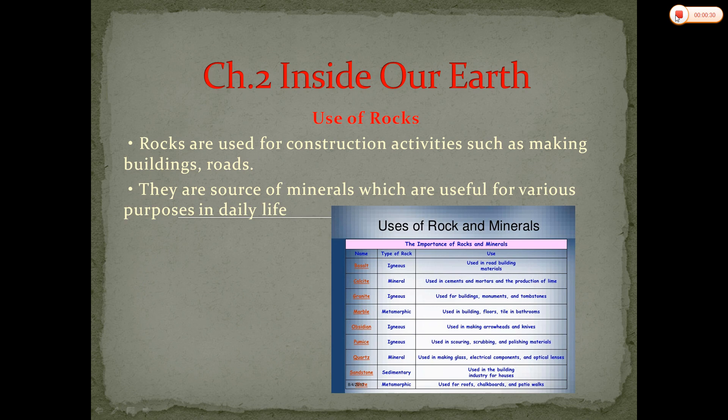We have seen that the interior of the earth is made up of different layers like the crust, the mantle, the upper and lower mantle, the core, and even the inner core and outer core. We also discussed how these different layers of the earth are formed of different kinds of minerals like silica, aluminium, and magnesium.